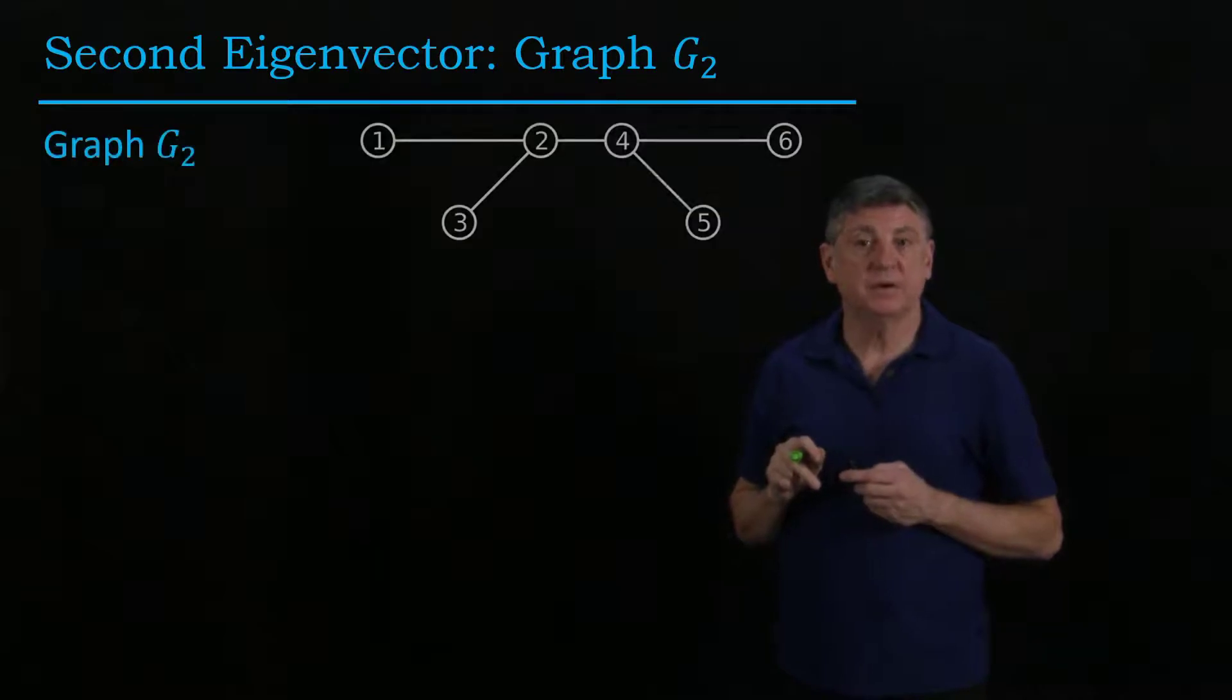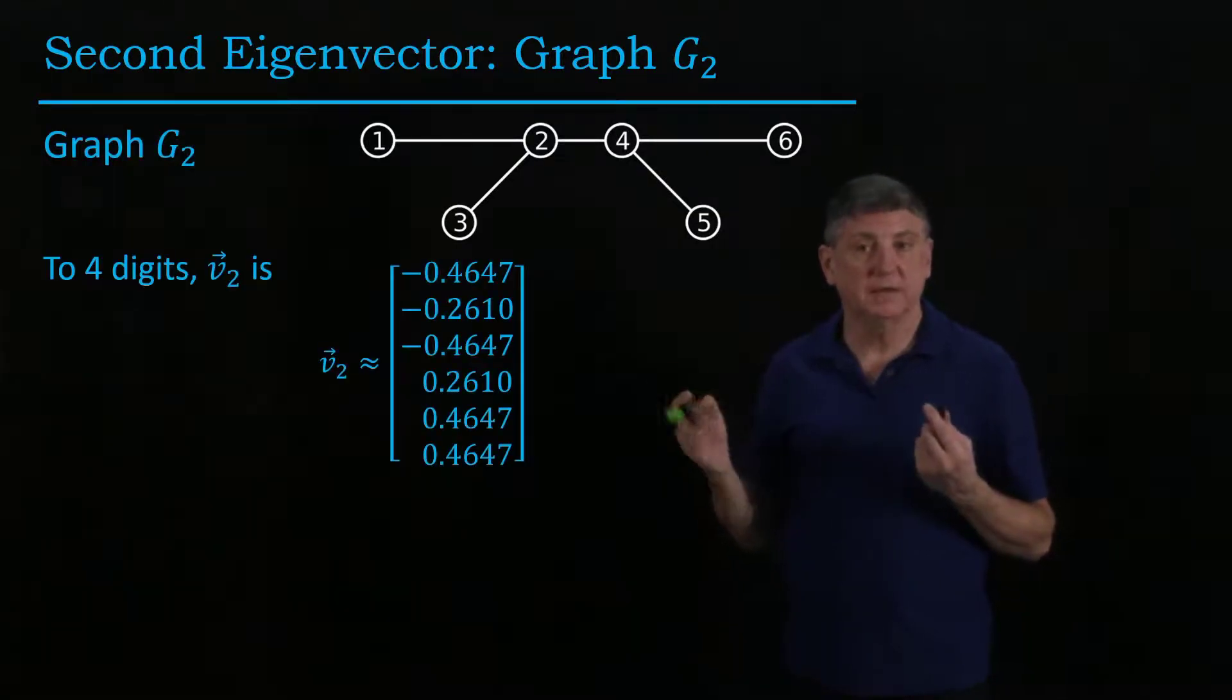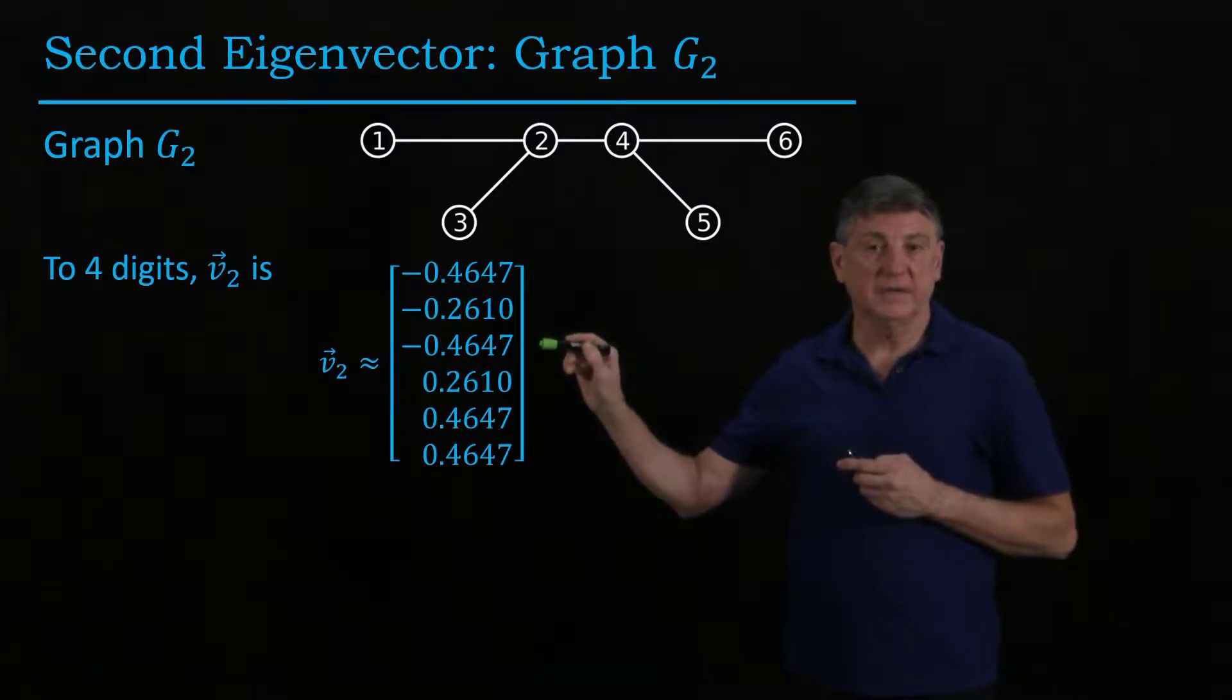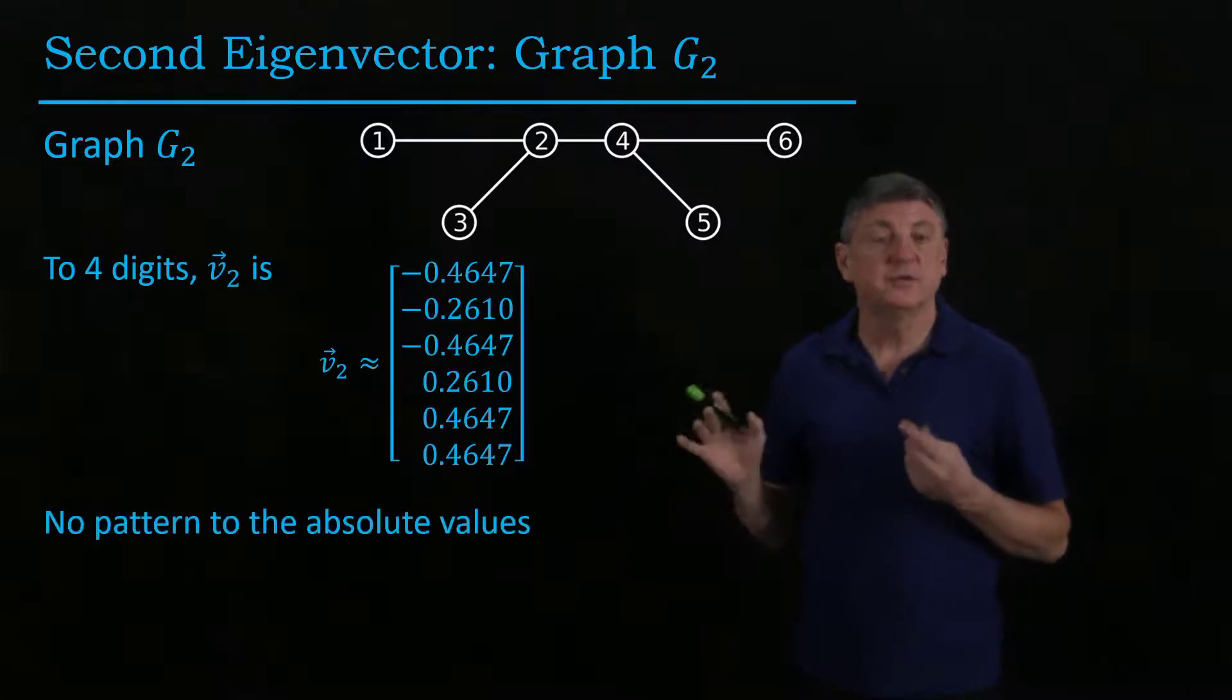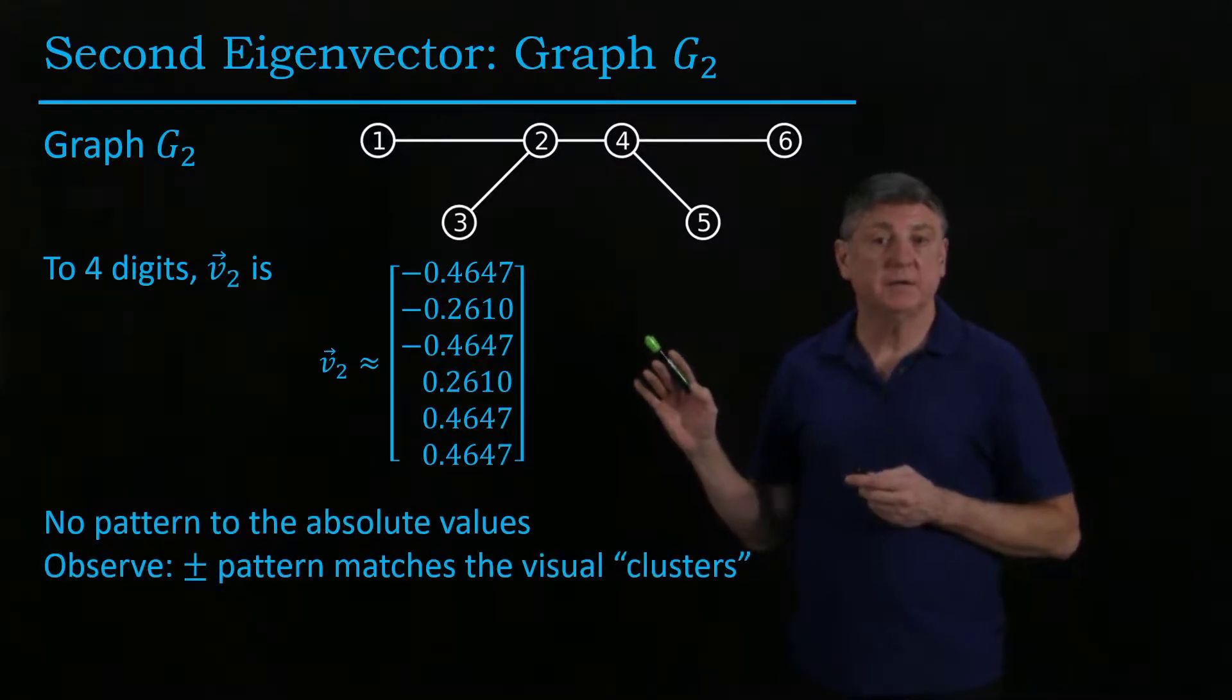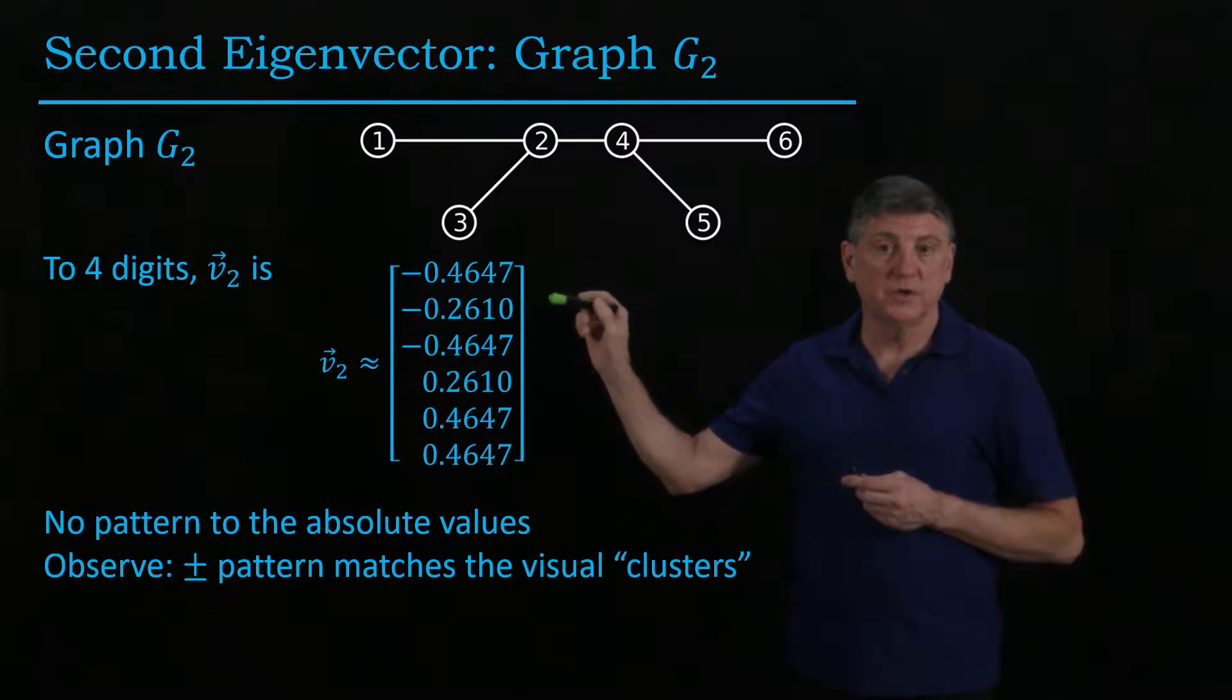And when we do that computation to four digits, this is what we get, is we get three of these are negatives and three of these are positives. There's no pattern to the absolute values of these, but there is a pattern to the sign of these. And that is, the ones with the negative sign are one, two, and three.